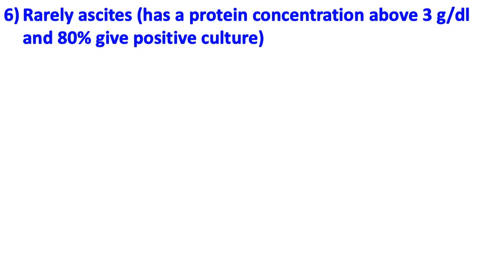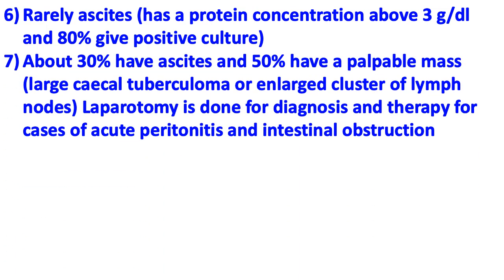Rarely, ascites is present. The patient has protein concentration above 3 grams, and 80% of patients give positive culture. About 30% have ascites, and 50% have a palpable mass — a large cecal tuberculoma or enlarged cluster of lymph nodes.